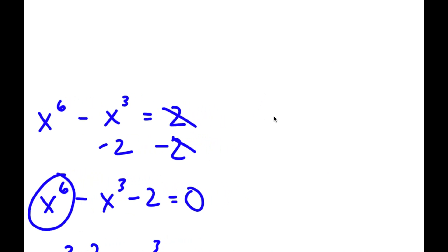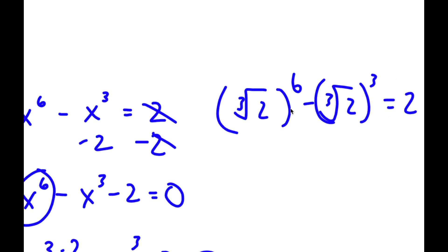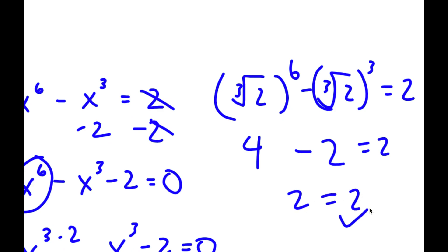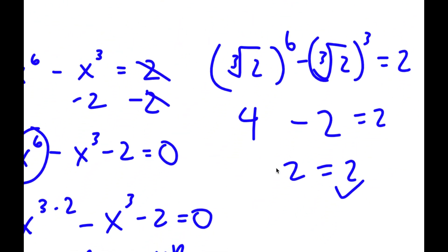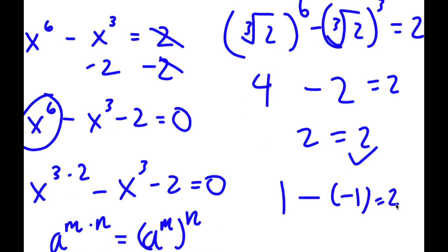Now to check, I'm going to plug these two in. First, the cube root of 2: the cube root of 2 to the power of 3 is 2, and the cube root of 2 to the power of 6 is 4. So I have 4 minus 2 equals 2, and 2 equals 2, so this is right. And for negative 1: negative 1 to the power of 6 is 1, minus negative 1 to the power of 3 which is negative 1. So 1 minus negative 1 is 2, and 2 equals 2. Both solutions are correct.